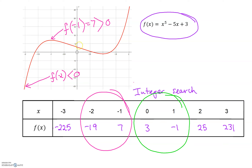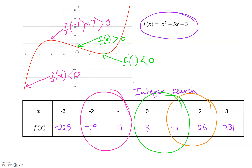Looking at the graph, f(0) is positive — the graph lies above the x-axis, and that is verified by the table. And f(1) is negative 1. So there is a change of sign — we've gone from a positive to a negative value of f of x. Therefore the curve has got to have cut the x-axis and there must be a root in that interval. The final root is within the interval (1, 2). Again, we have a change of sign: f(1) is -1, which is negative, and f(2) is 25, which is positive. Therefore the graph has cut the x-axis and a root exists in that interval.